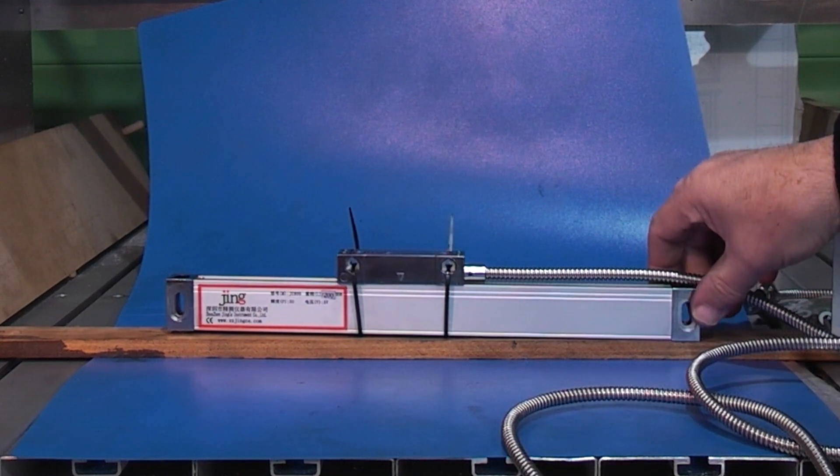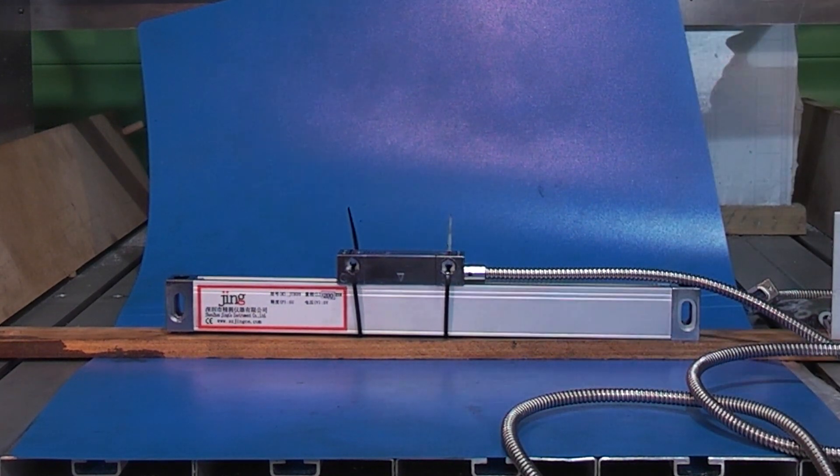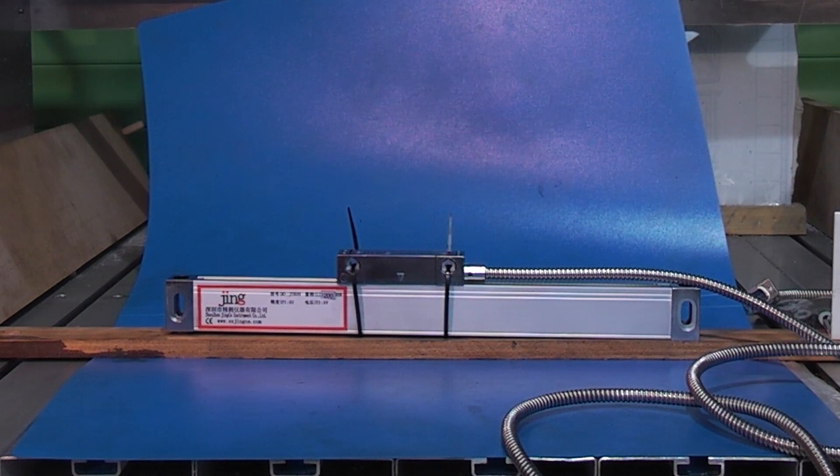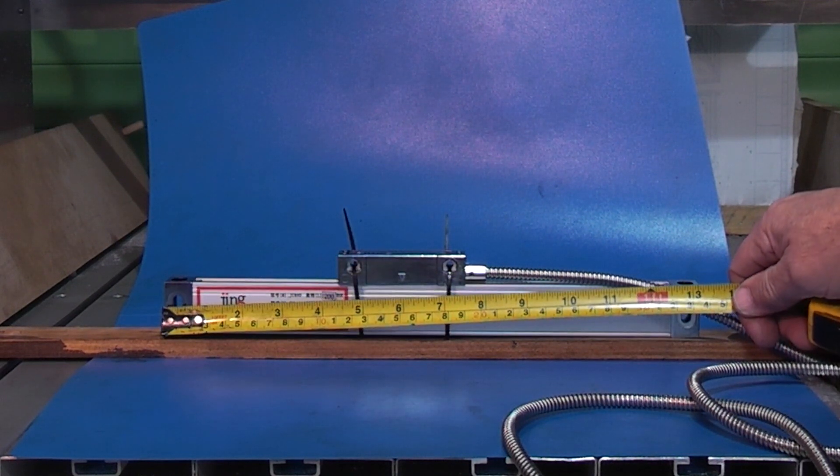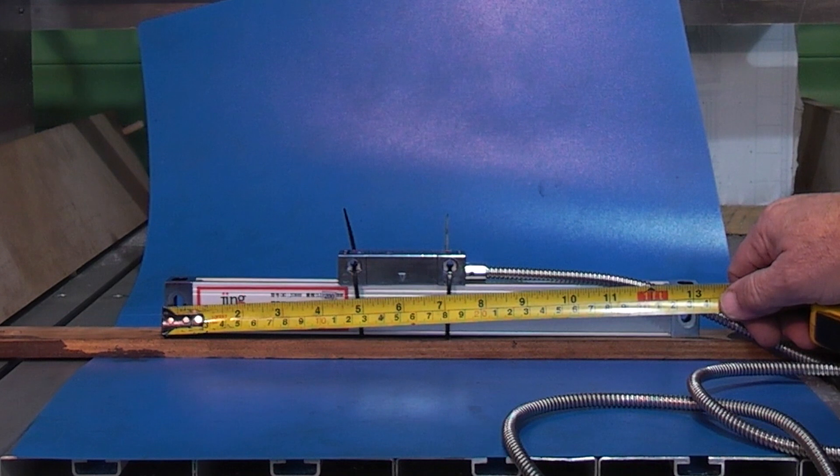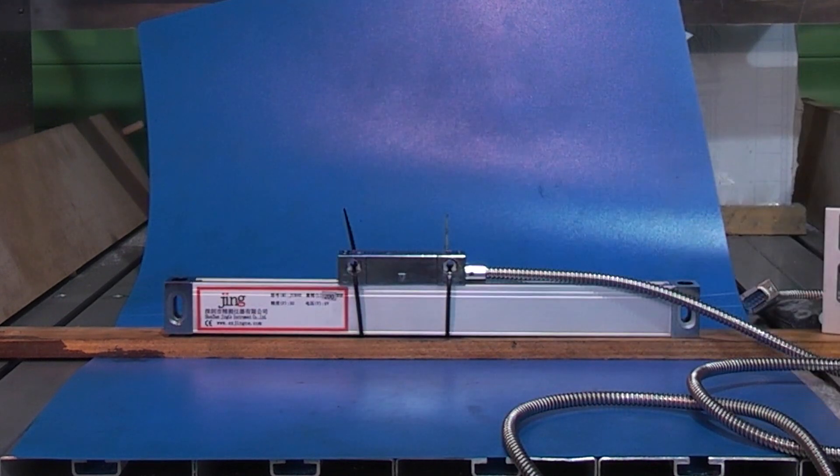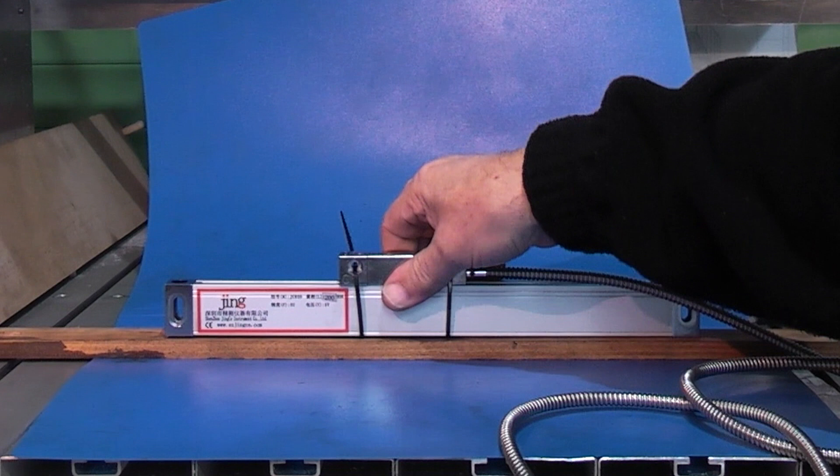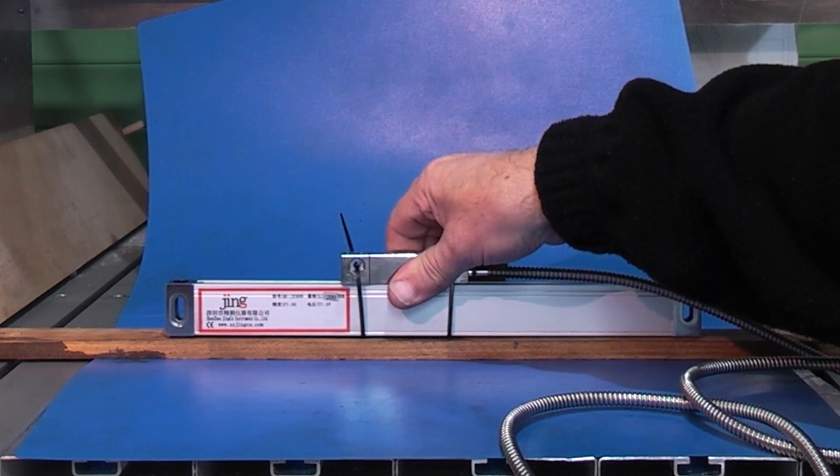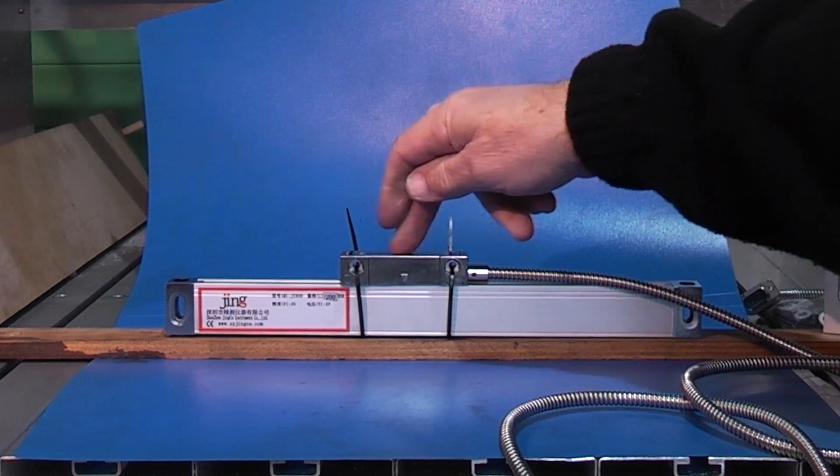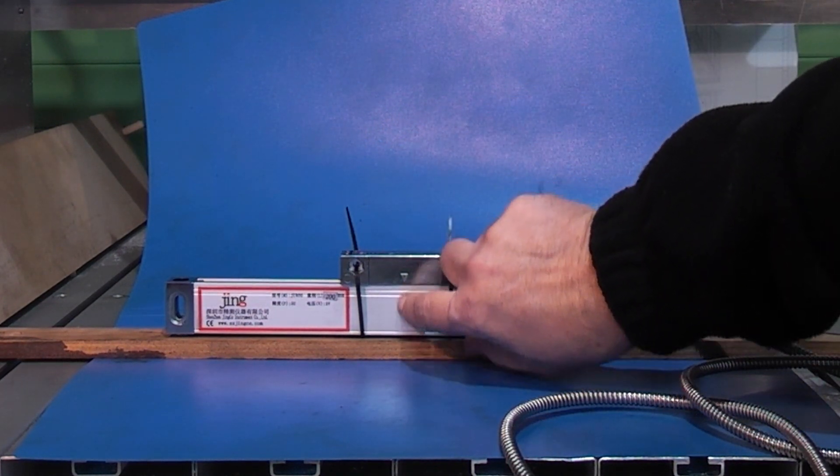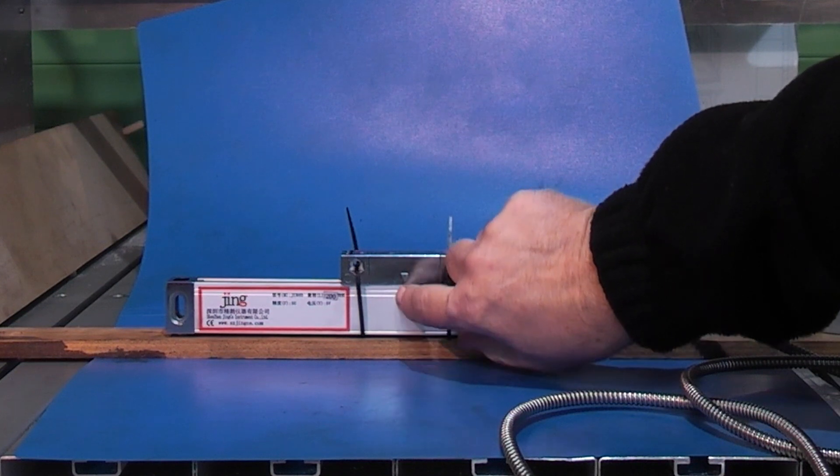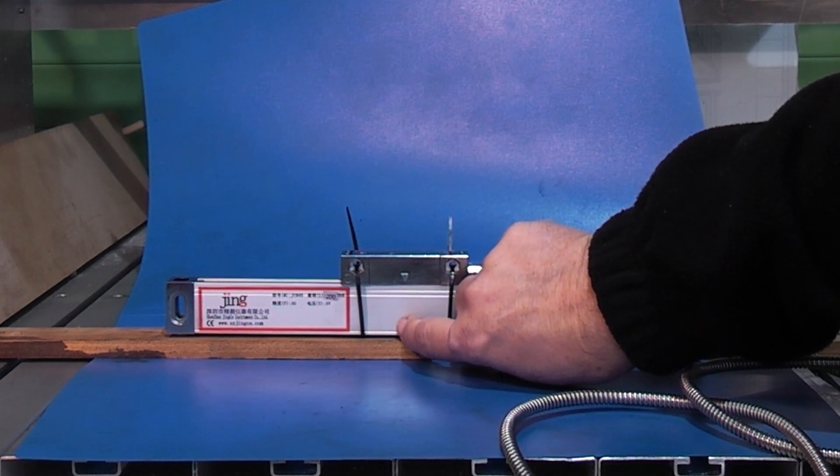So the first thing you need to do is measure the length of travel of your machine before you order the scale. Because when you get the scale it'll be longer than the length of travel. This one's a 200mm scale and it's 340mm in length. And that's because on the scale the readout is in the middle where this little arrow is, and when it moves to the end it's a good inch and a half in each end. To get the readout length that you need, the scale will therefore be longer.